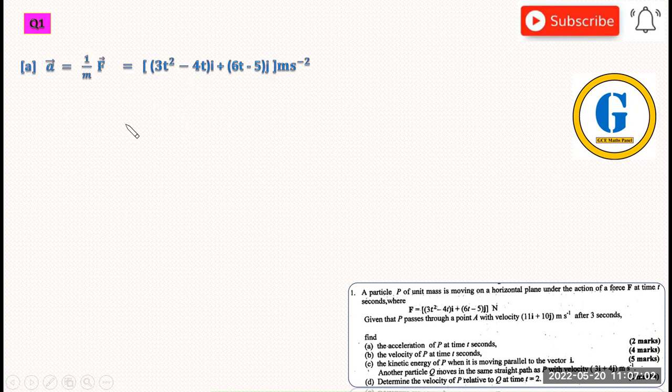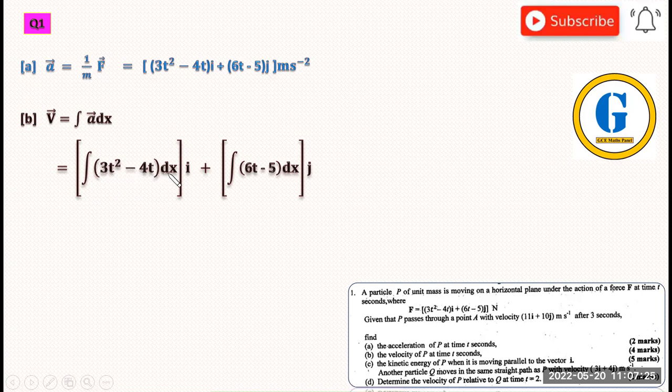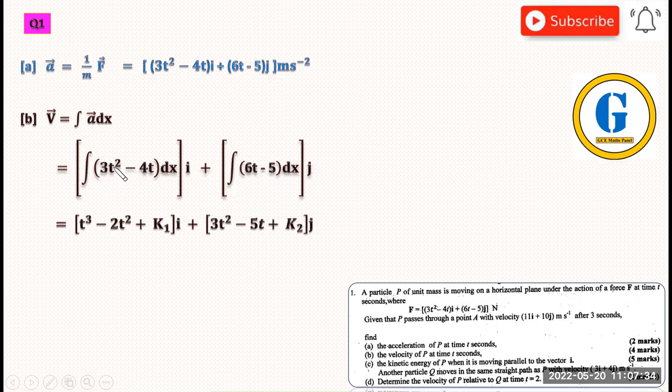Next, part (b) says you should find the velocity of P at any given time t. To find the velocity from acceleration, we have to do integration. Velocity is the integral of acceleration. When we integrate the i components, we have (3t² - 4t)dt, which gives us t³ - 2t² plus a constant K₁.